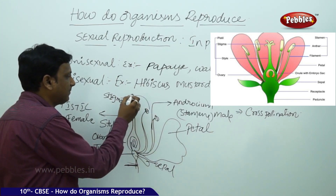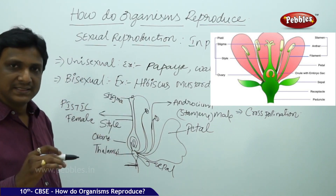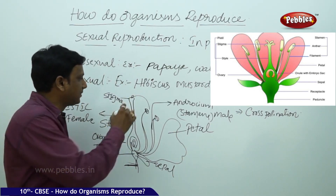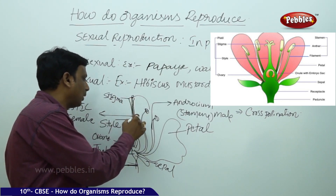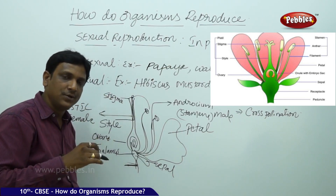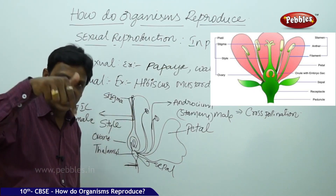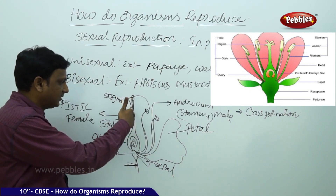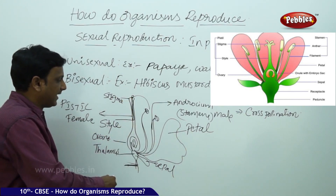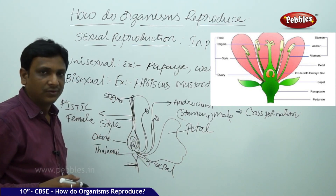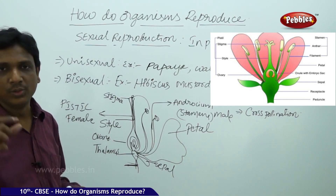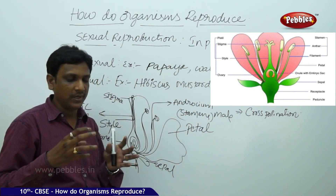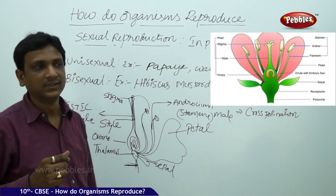So from the anther to the stigma the pollen reaches. The stigma has a sticky substance which enables the pollen to stick. Once the pollen sticks to the stigma, it produces a tube called the pollen tube. This pollen tube grows and extends into the ovary, passing into the ovary. The male gametes present in the pollen travel through this pollen tube, pass down, and finally reach the ovule. Inside the ovule, female gametes are there. The male gametes enter the ovule and fuse with the female gametes to form the zygote.